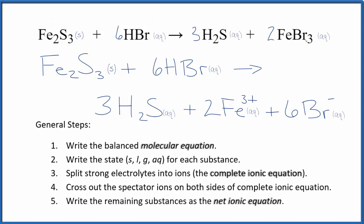And then this FeBr3, we did split that apart into the two iron 3 ions, and then those six bromide ions. Two times three, that'll give us six of these bromide ions.